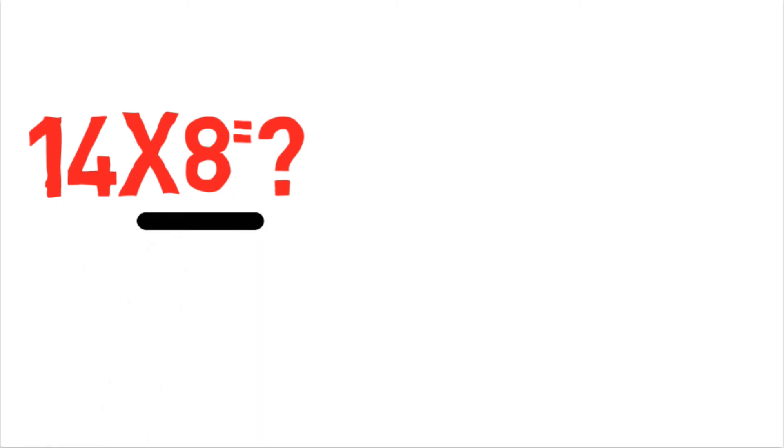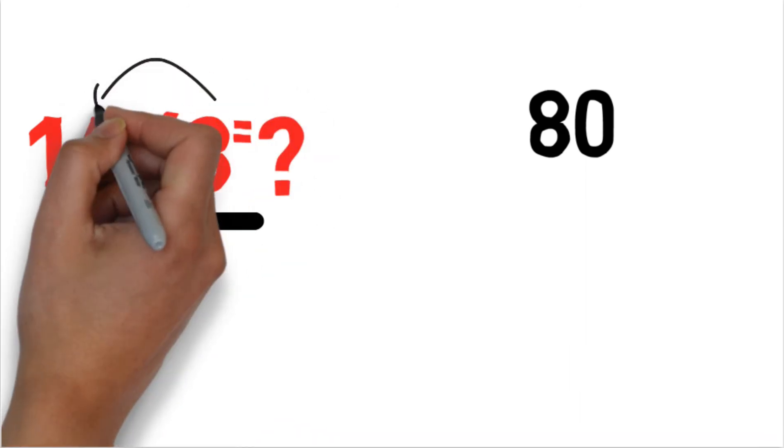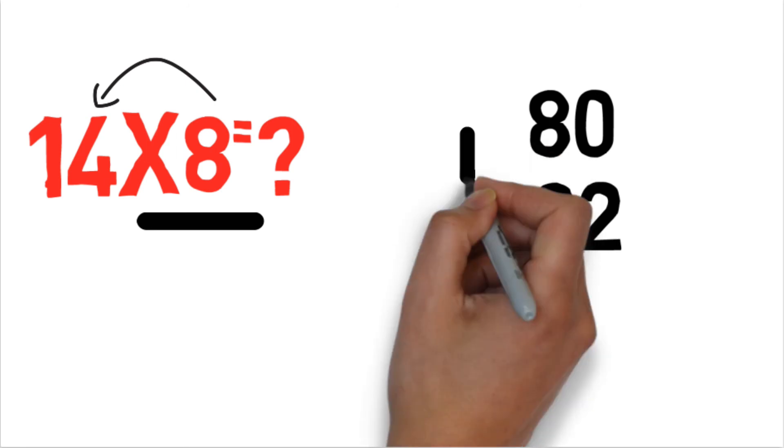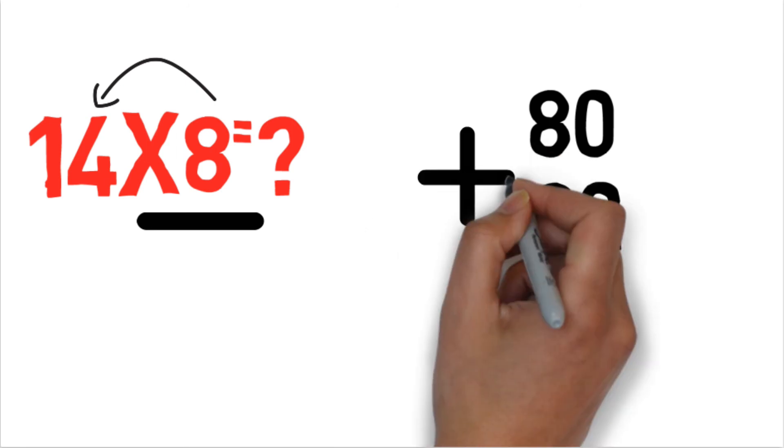So this is 8: 8, 0 is 80, and 8×4 multiply is 32. So answer is 112. So 14×8 is 112, pretty simple.